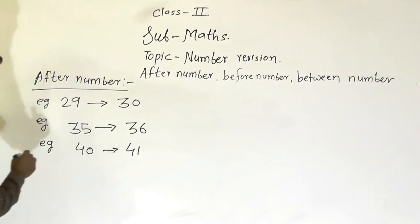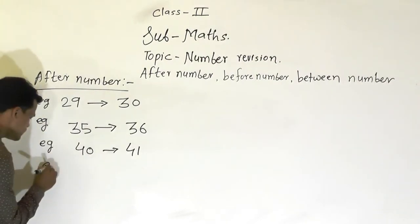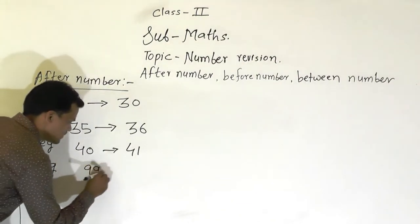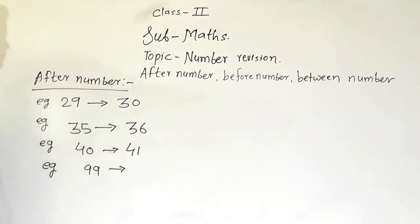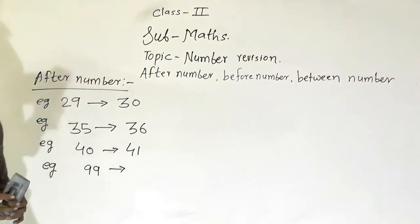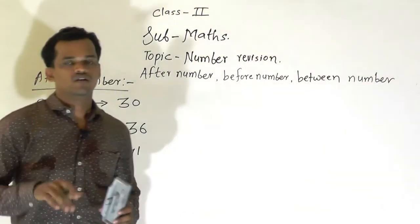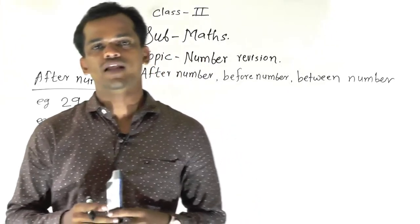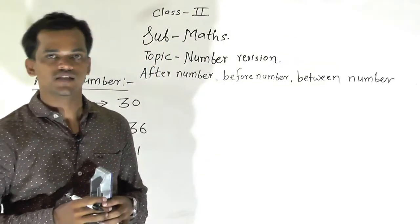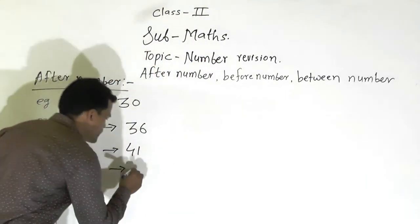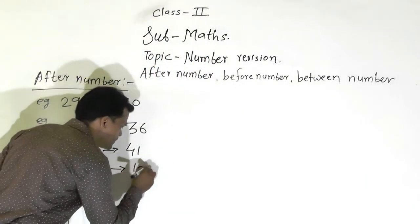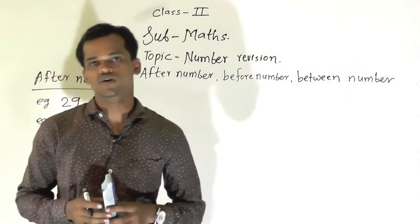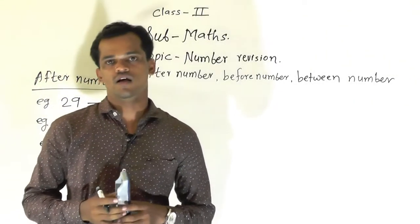One more example we will see here. 99. So after 99, 100 comes. So the after number of 99 is 100. It is a very simple concept, and this concept we have learnt in first standard also.